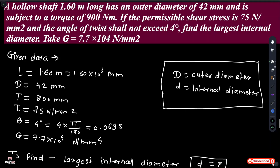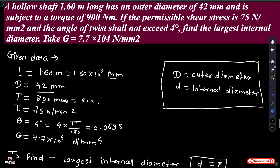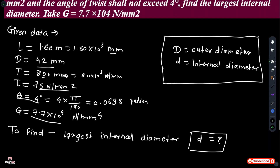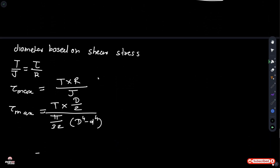A hollow shaft 1.6 meters long, so L is equal to 1.6 meters converted into mm. Outer diameter D is equal to 42mm and is subjected to torque of 900 N·m, converted into 900×10³ N·mm. The permissible shear stress tau is equal to 75 N/mm². Angle of twist shall not exceed 4 degrees, converted into 0.0698 radians. Find the largest internal diameter. G (modulus of rigidity) is equal to 7.7×10⁴ N/mm².